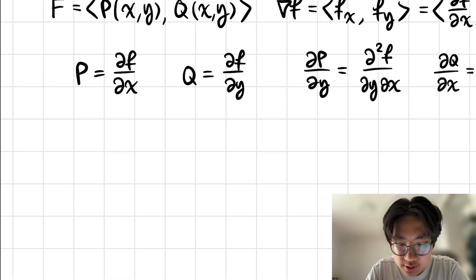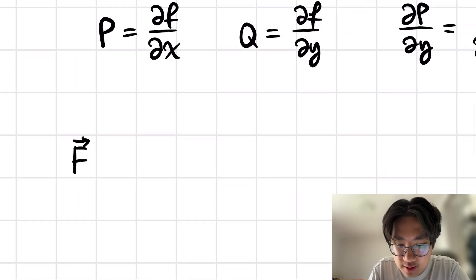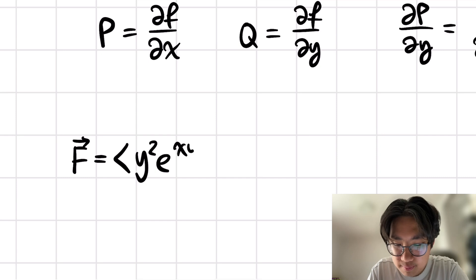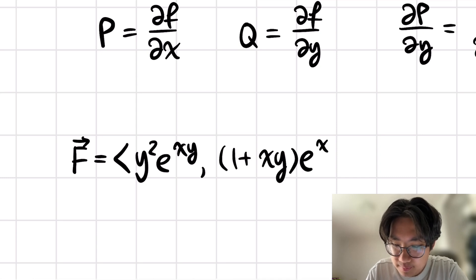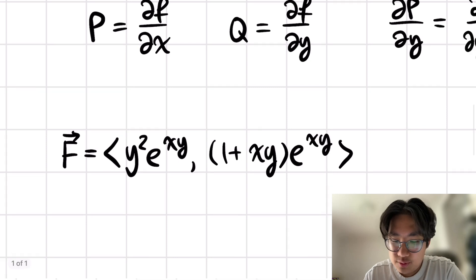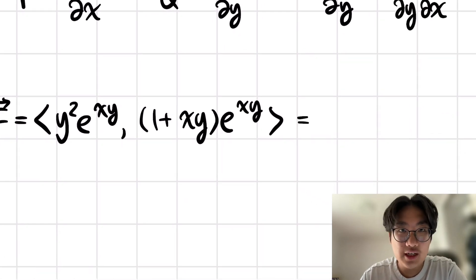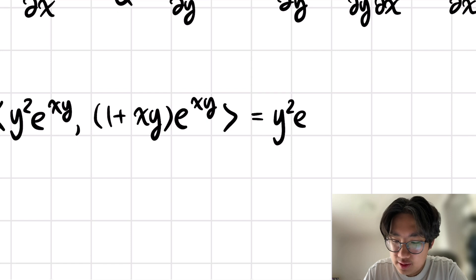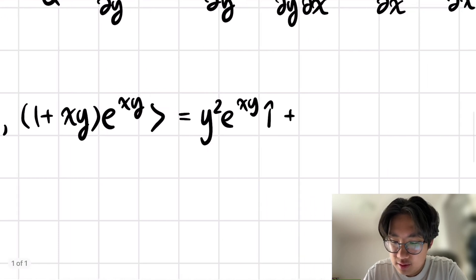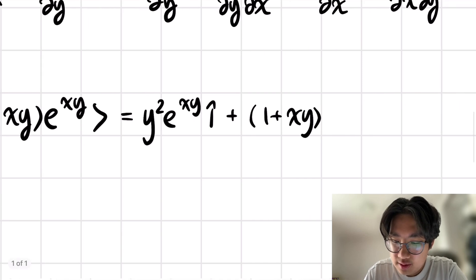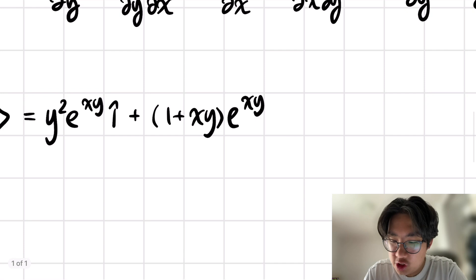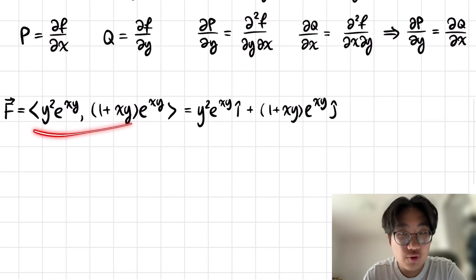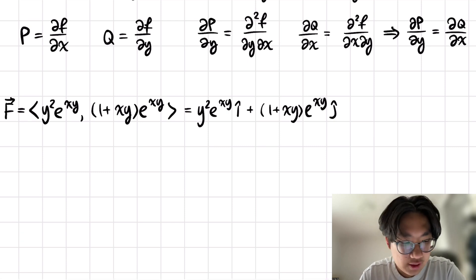Getting to the actual question now. Our vector field F is defined as follows: F equals y squared e to the xy, and then 1 plus xy times e to the xy. We can also express this in terms of unit vectors: y squared e to the xy i-hat, plus 1 plus xy times e to the xy j-hat. These two forms are equivalent.